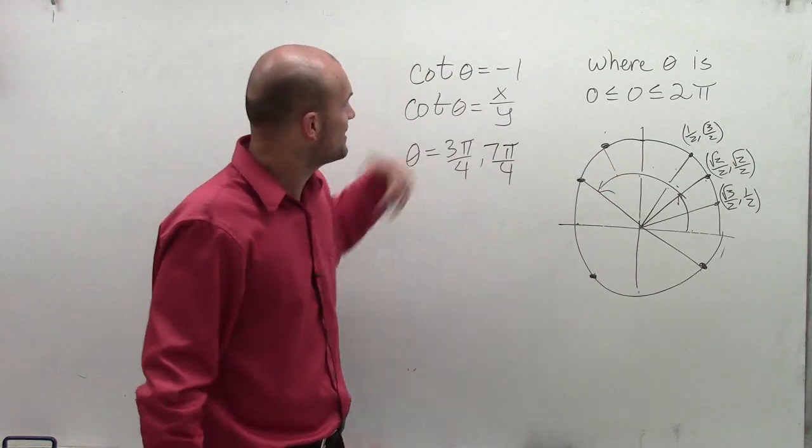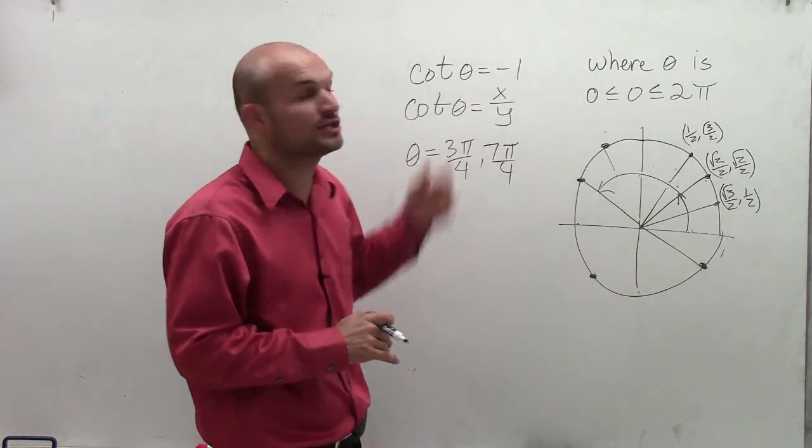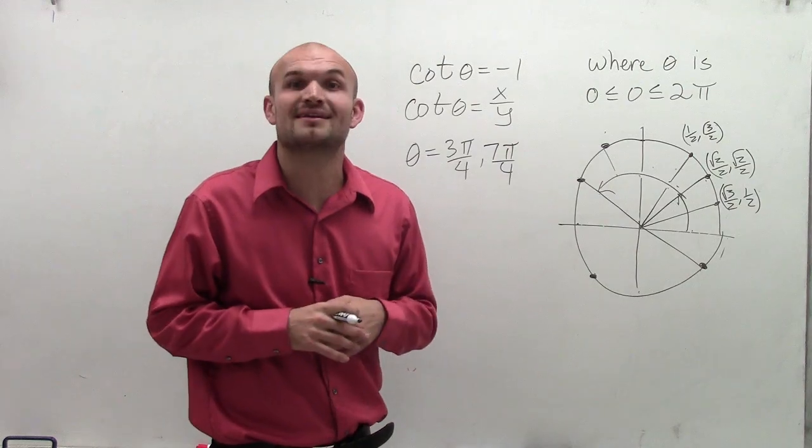And there we go, ladies and gentlemen. That's how you find theta when you're given the cotangent theta is equal to negative 1. Thanks.